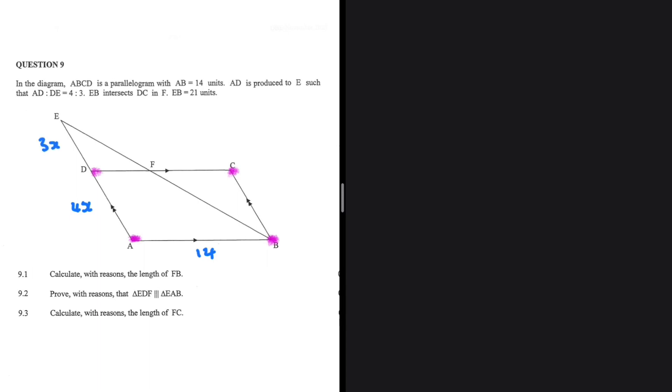It is not necessarily 4 and it is not necessarily 3, but when we divide them, we will get 4 divided by 3. And then EB intersects DC in F, and then EB is equals to 21 units.